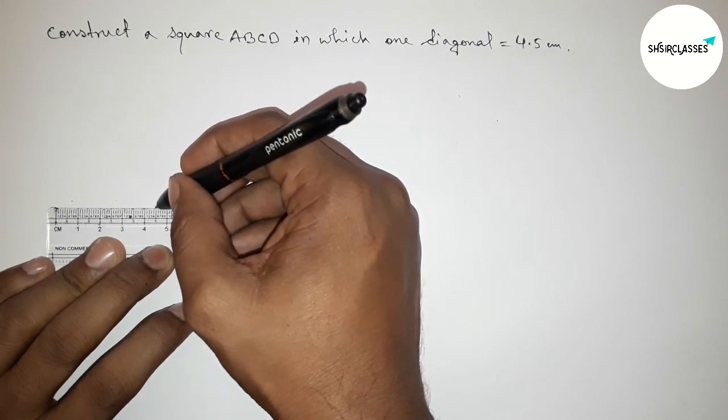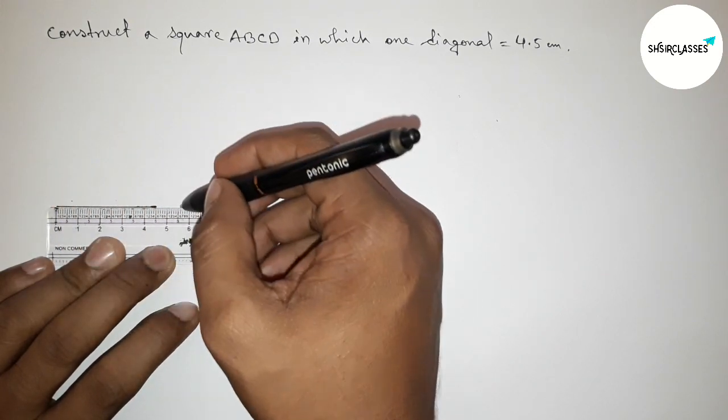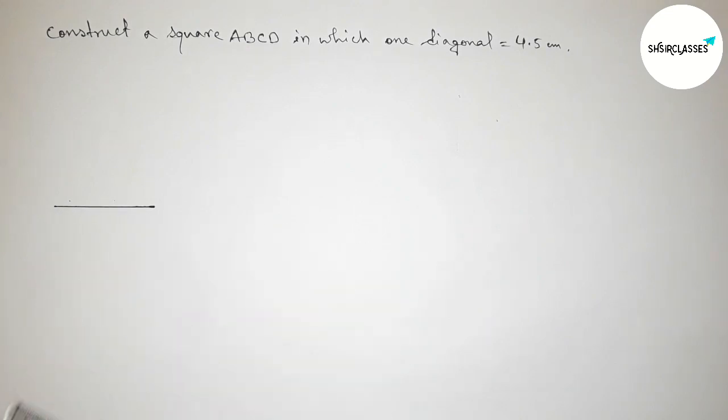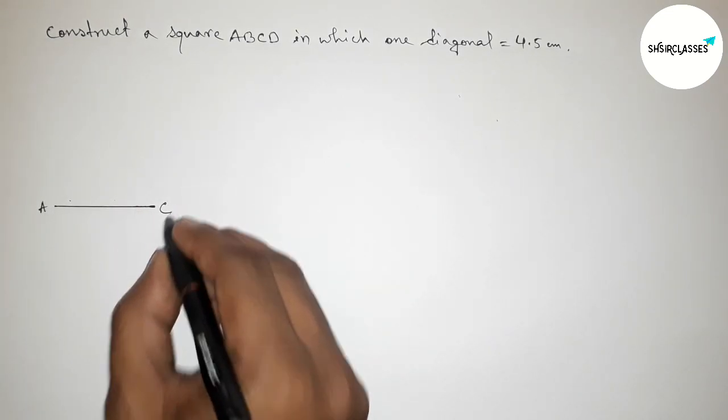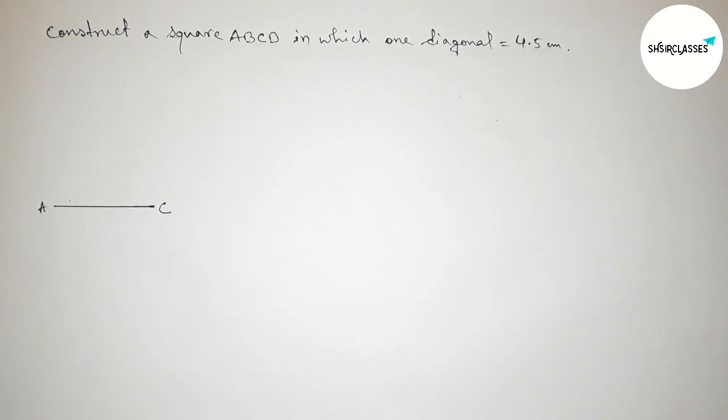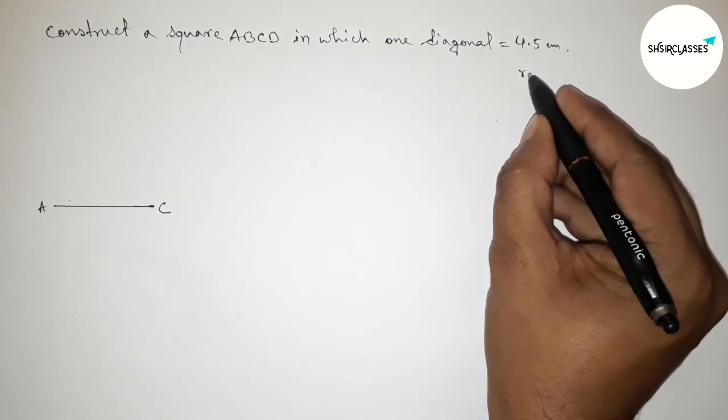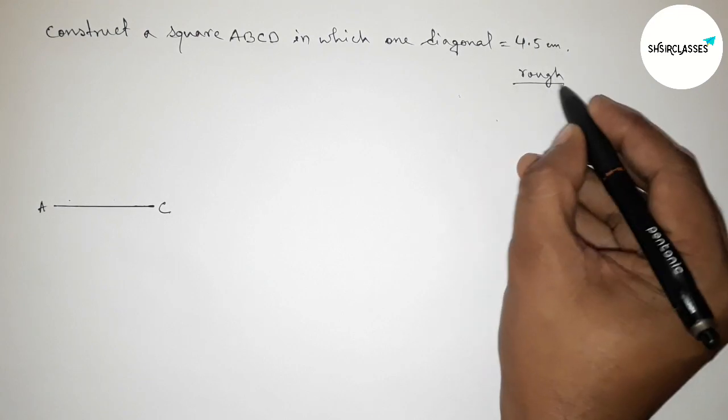Now taking here point A and here C. Next, roughly discussing some important property about square.